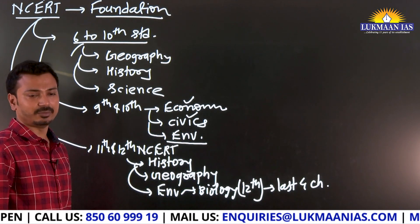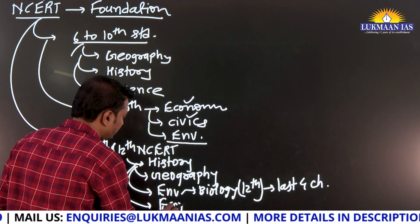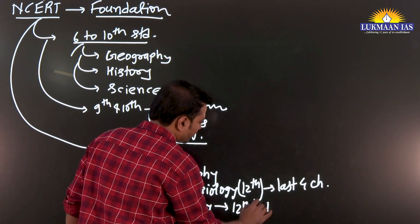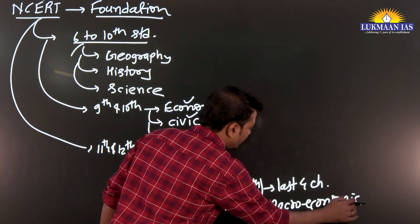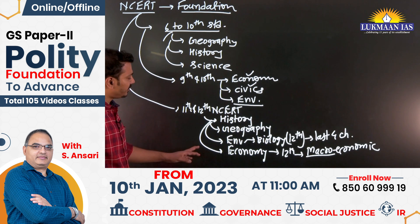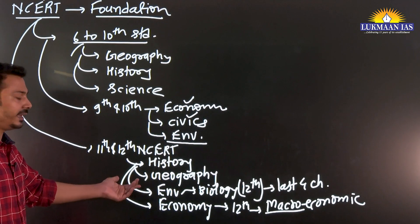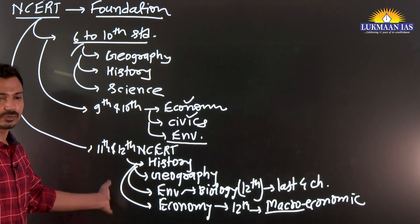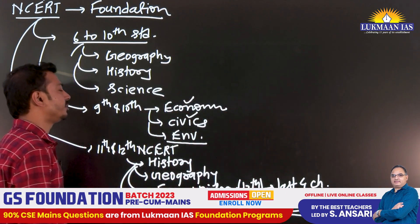If we talk about Economy, the first book is the 12th standard — which covers Macro Economics and Micro Economics. The 11th standard covers Economic Growth and Development, so you should read that too. But Macro Economics is very important, especially for the Prelims examination.